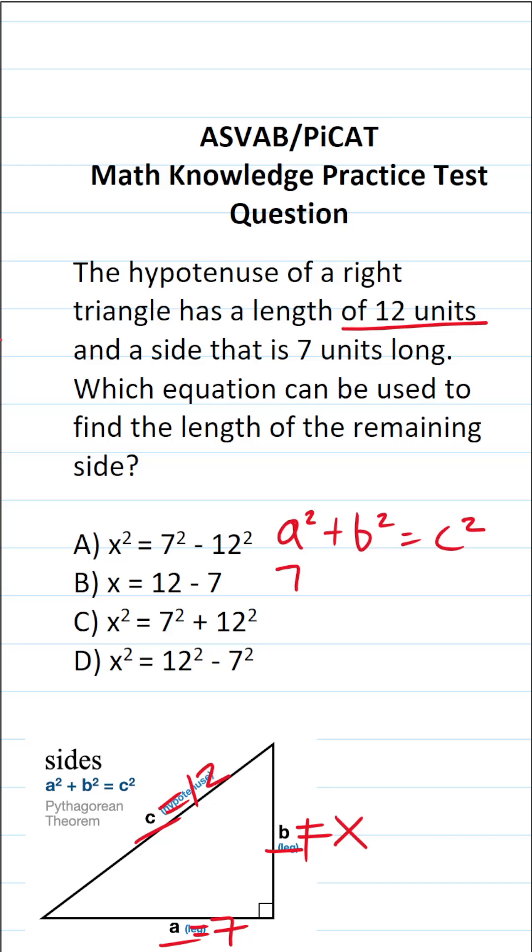So this becomes 7 squared plus X squared equals 12 squared. Again, I got all these values from down here. And now we want to know the length of the remaining side. The remaining side is X, so we're going to be solving this equation for X.